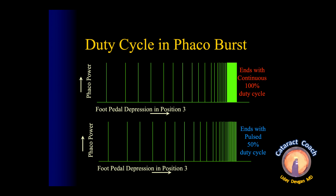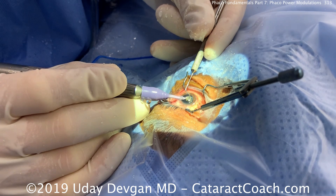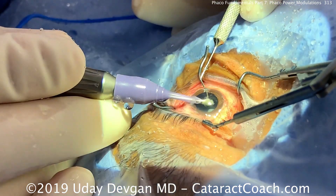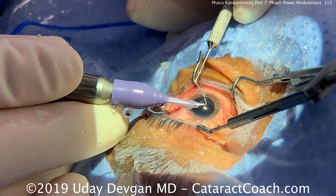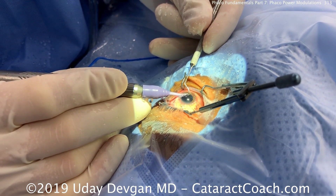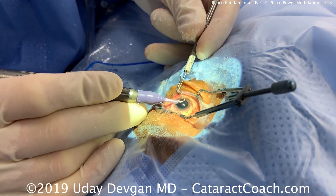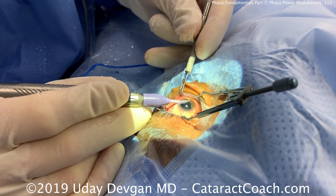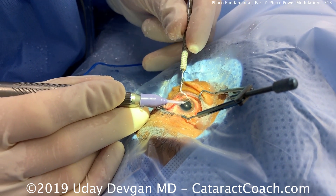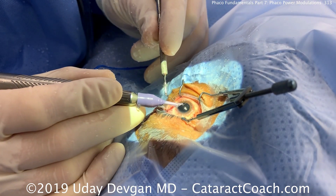Upcoming topics on cataractcoach.com will cover pulse range and burst range, how to program the machine, what duty cycles are and why a variable duty cycle makes sense. We'll also discuss occlusion mode — where some phaco machines change energy delivery depending on whether the tip is occluded with lens material. Finally, we'll cover different types of energy delivery: longitudinal phaco, and non-longitudinal types such as torsional or elliptical energy, where the needle moves in circular patterns rather than front to back.